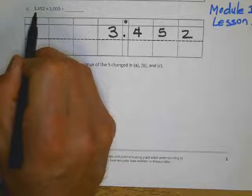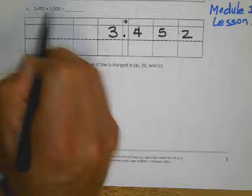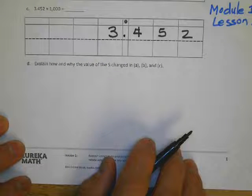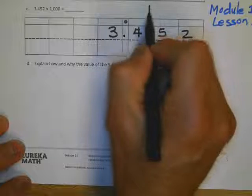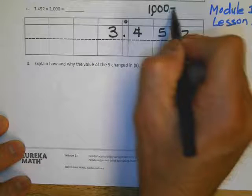The number is three and four hundred fifty-two hundredths times one thousand. Now just to refresh your memory, remember that one thousand equals ten times ten times ten.